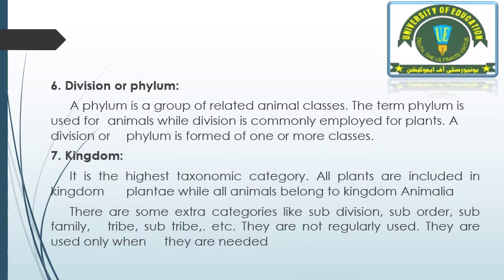Number six is division or phylum. A phylum is a group of related animal classes. The term phylum is used for animals while division is commonly used for plants. A division or phylum is formed from one or more classes. Number seven is kingdom — the highest taxonomic category. All plants are included in kingdom Plantae while all animals are included in kingdom Animalia. There are some other categories like subdivision, suborder, subfamily, tribe, etc., but they are not regularly used — only the seven taxonomic categories are commonly used.